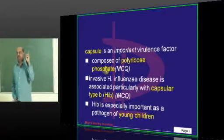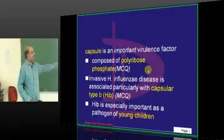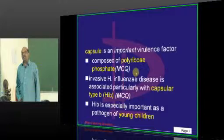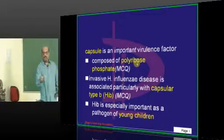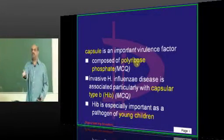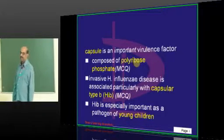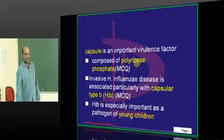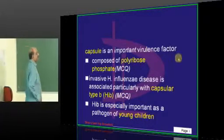The capsule is made up of polyribose phosphate. A lot of times this question is asked: a polyribose phosphate capsule is found — what is the organism? Or which vaccine contains a polyribose phosphate capsule? The answer is Haemophilus influenzae.